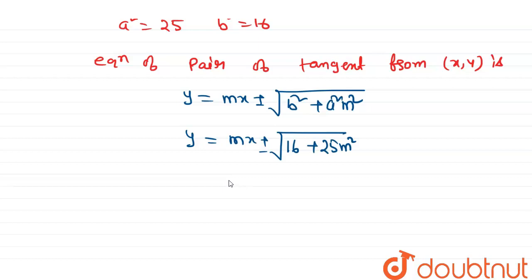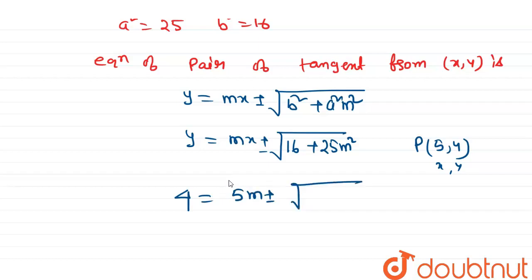This equation passes through the point P(5, 4). So x = 5 and y = 4. Substituting: 4 = 5m ± √(16 + 25m²).